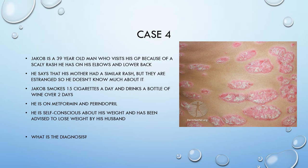Case four. Jakob is a 39-year-old man who visits his GP because of a scaly rash on his elbows and lower back. He says his mother had a similar rash. Jakob smokes 15 cigarettes a day, drinks a bottle of wine over two days, and is on metformin and perindopril. He's self-conscious about his weight. This is a spot diagnosis — that scaly rash is psoriasis. Psoriasis can present in a number of different ways and it's classically a scaly, pearly-looking rash on the extensor surfaces of the body.